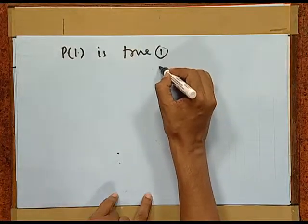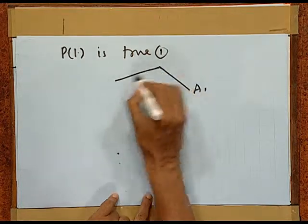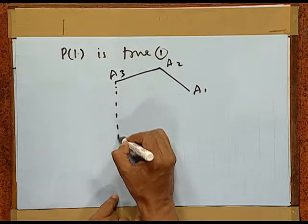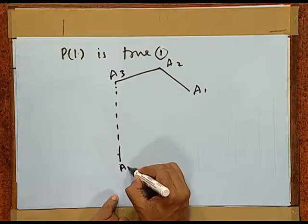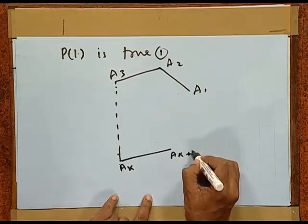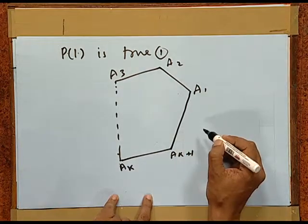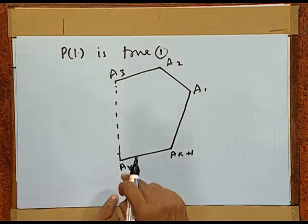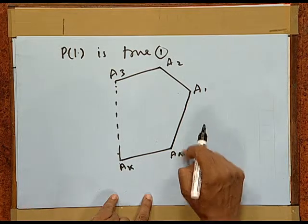And from this assumption, we have to prove for k plus 1 sides. For this, we draw a polygon A1, A2, A3 and so on up to Ak, then Ak+1. So, before us, we have a polygon having k plus 1 sides: A1, A2, A3, and so on up to Ak, Ak+1, and Ak+1 back to A1.